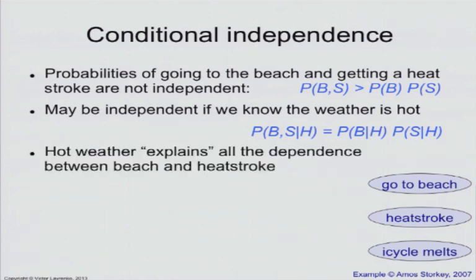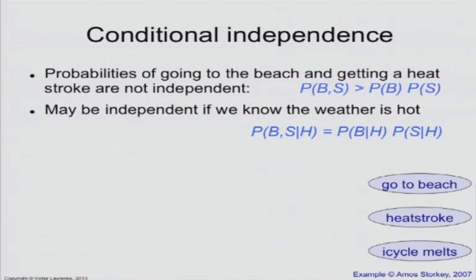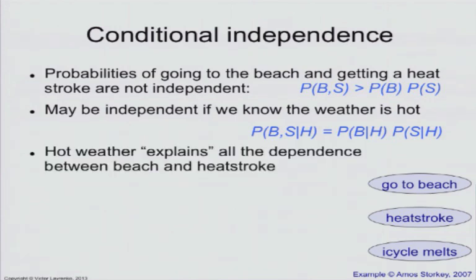So what you could say is that once you factor in whether the weather is hot or not, the events of going to the beach and getting a heat stroke are independent of each other. Because whether the weather is hot or not, if it's hot, then high chance of going to the beach, high chance of getting a heat stroke, high chance of getting those things together. So in a way, the hot weather, it explains all of the correlation between going to the beach and getting a heat stroke. That's what conditional independence is about. You're saying that there is a factor, a latent factor, that is not explicitly present in your model that you're not observing, maybe, that explains your observations.